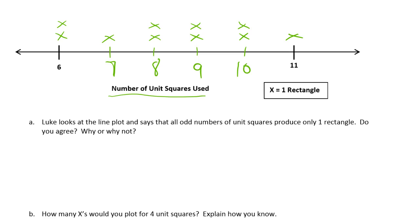Luke looks at the line plot and says that all odd numbers of unit squares produce only one rectangle. Do you agree? Why or why not? Well, what are the odd numbers here? Seven, nine and eleven. Well, the nine has two, doesn't it? So I disagree. Nine has two rectangles.